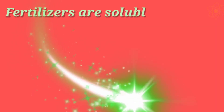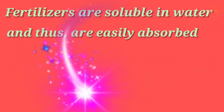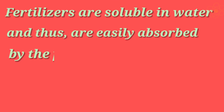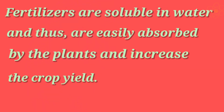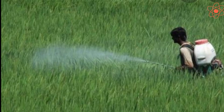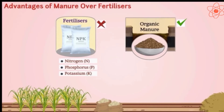Fertilizers are soluble in water and therefore are easily absorbed by the plants and increase the crop yield. They are usually applied either by spraying using a sprayer or through irrigation canals.